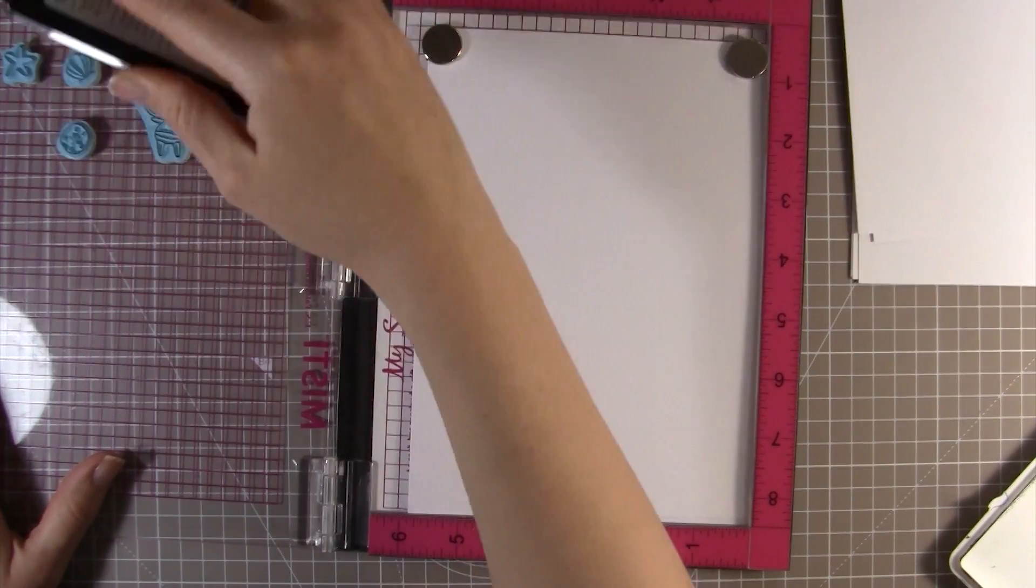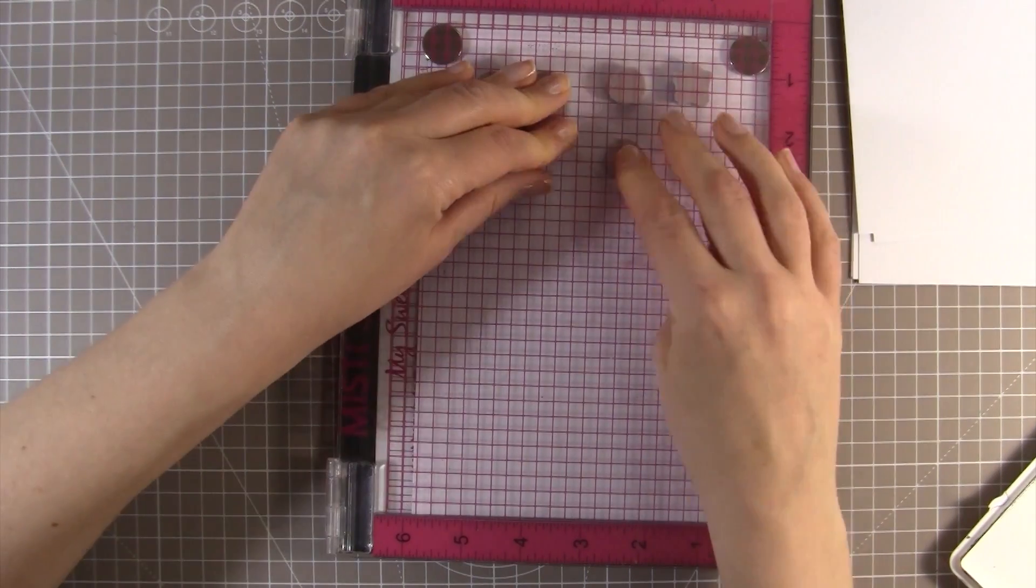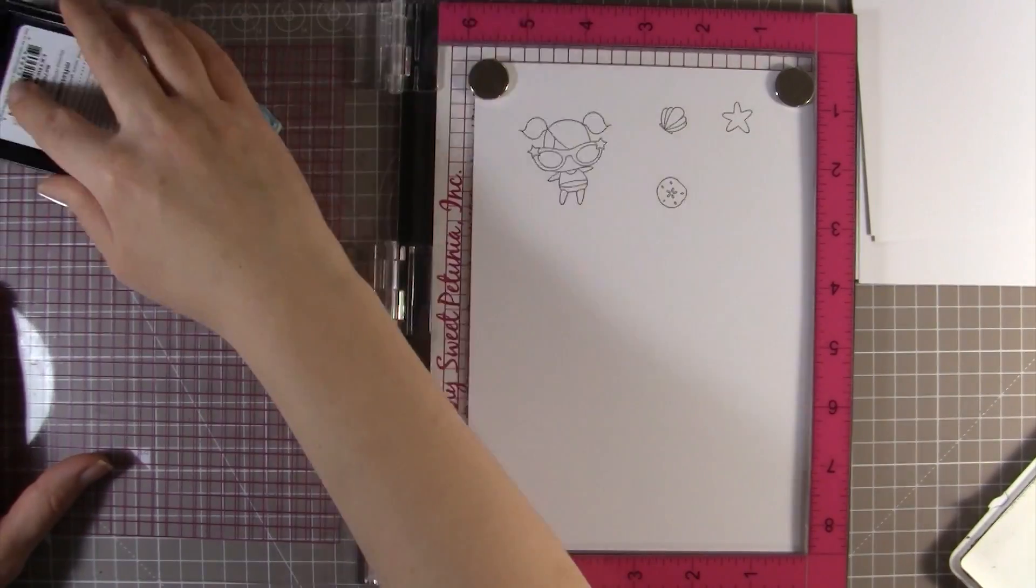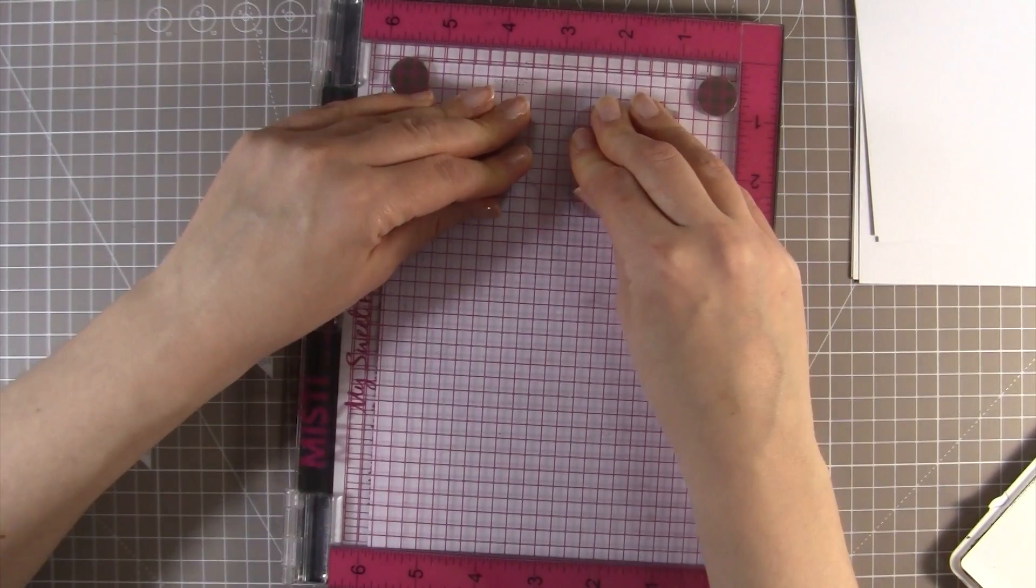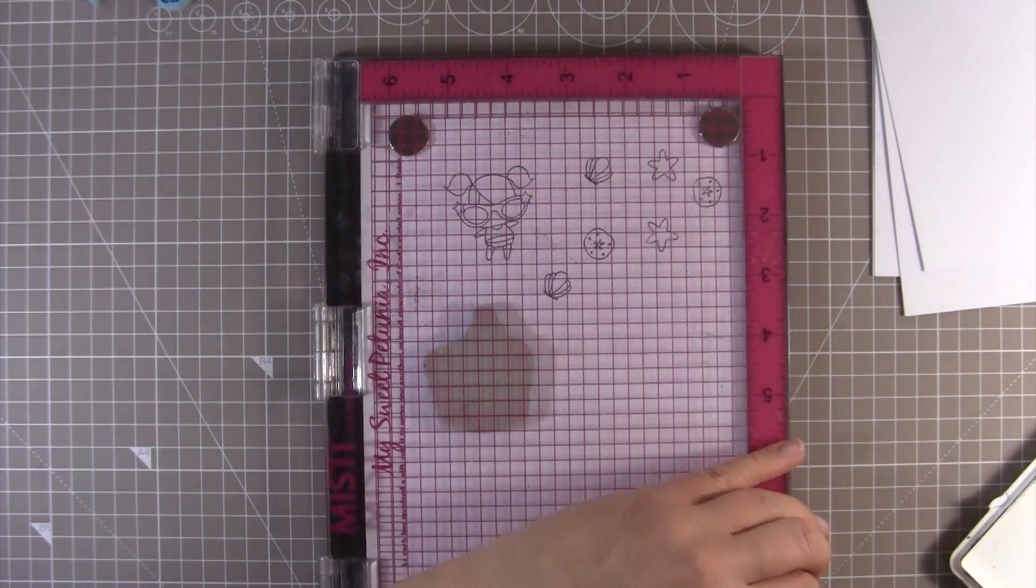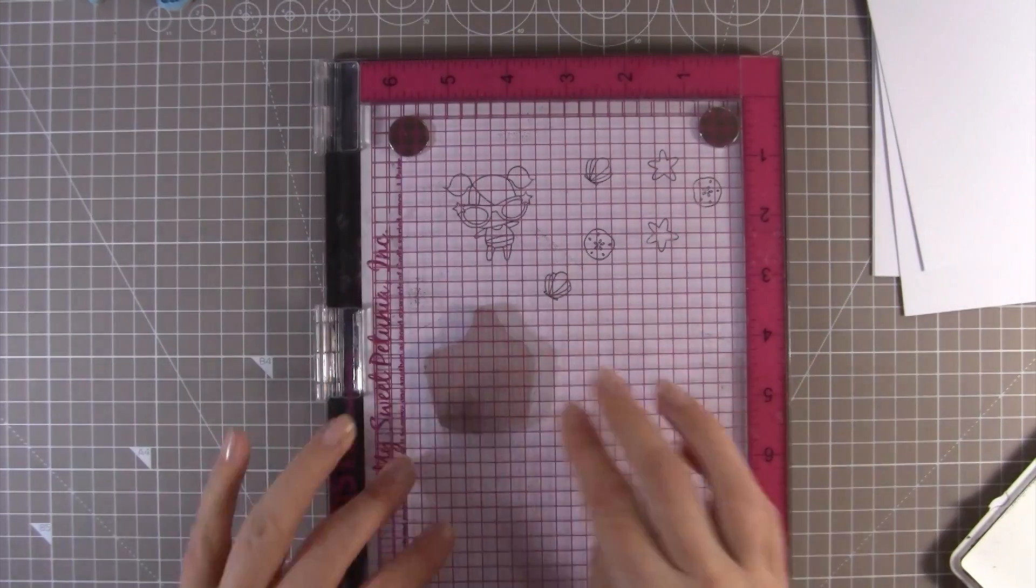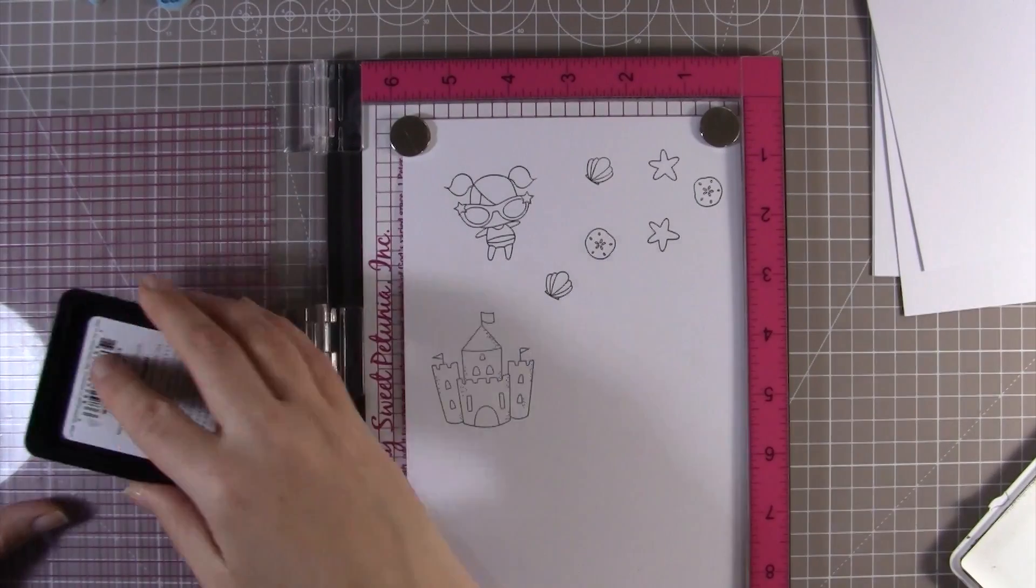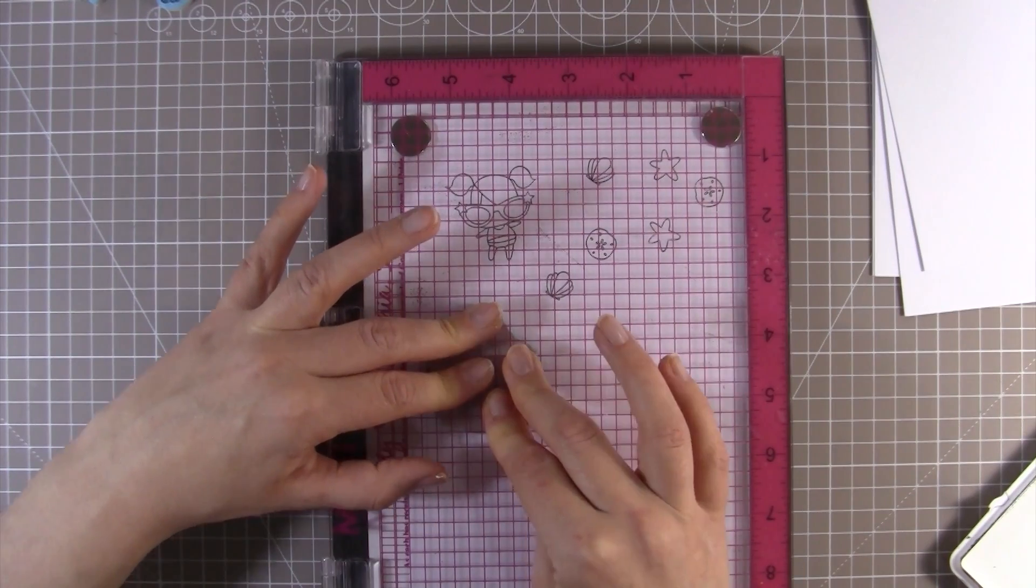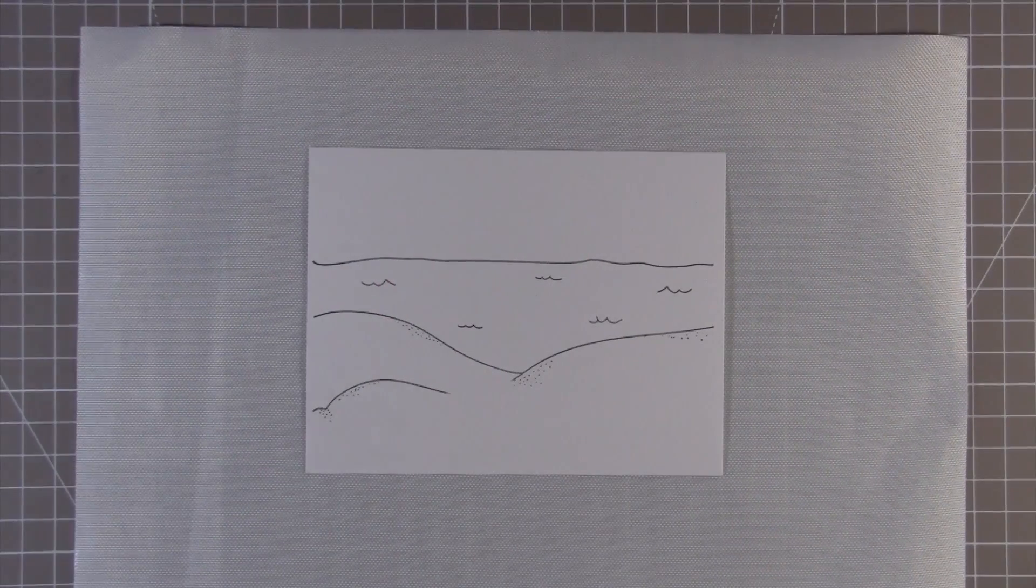I stamped the Beach Backdrop on Strathmore Bristol Smooth Surface paper because I knew I was going to work with the Distress Oxides to color the background instead of using Copic markers. It just makes it much faster and a less stressful process in terms of getting that blending for the sky. Right now I'm stamping my images which I'm planning on die cutting. I'm stamping these on Make It Colour Blending card, which is my preferred card for Copic coloring.